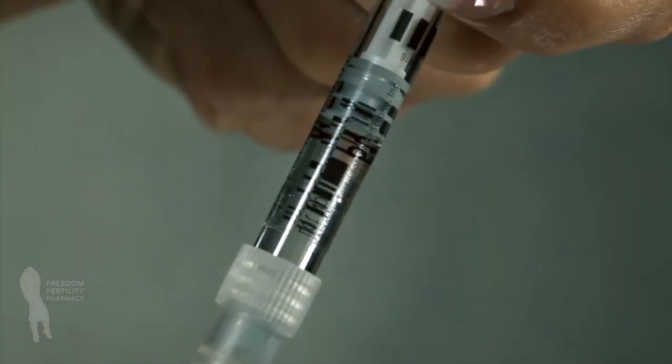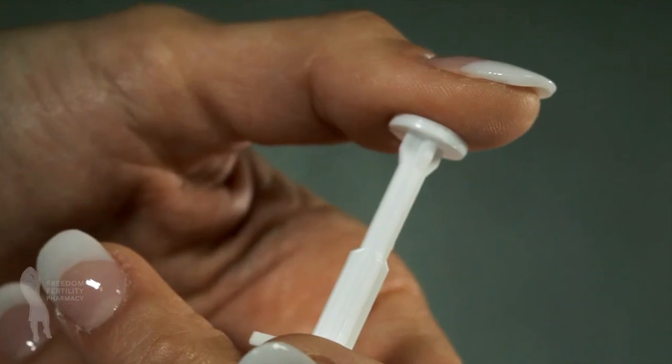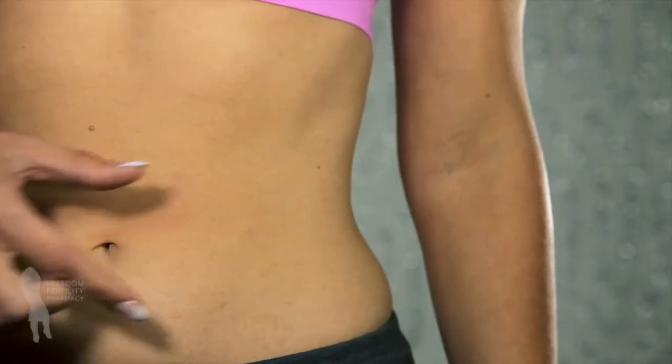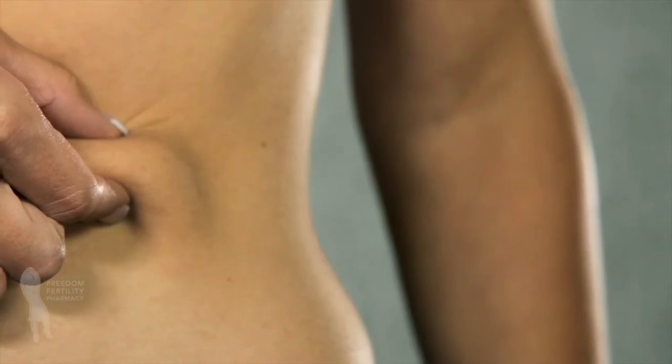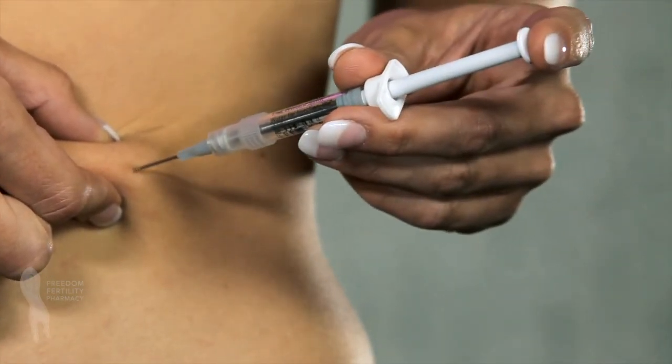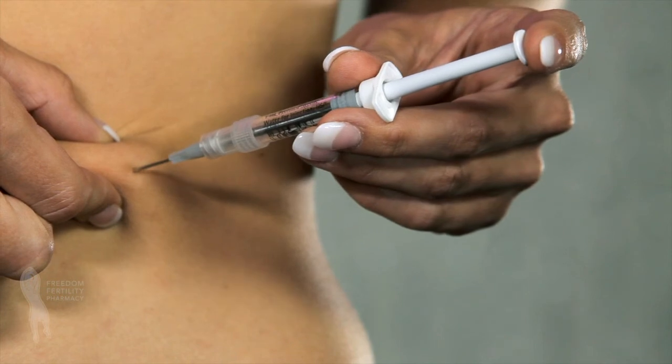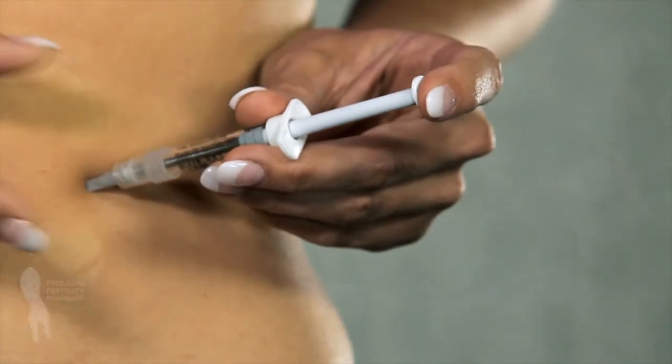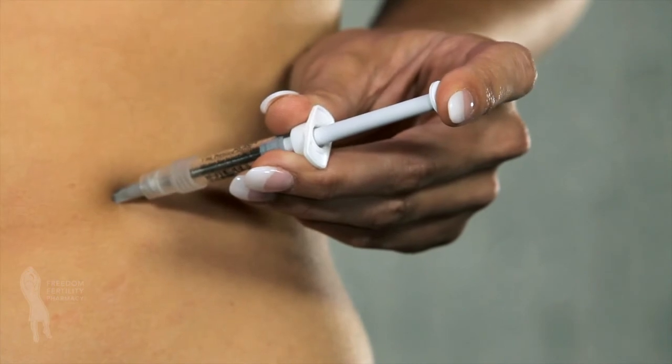Hold the syringe in your dominant hand like a pen or pencil. With the other hand, gently grasp a small fold of skin between your thumb and index finger at the selected injection site. Insert the entire length of the needle into the fold of skin at a 45 to 90 degree angle.